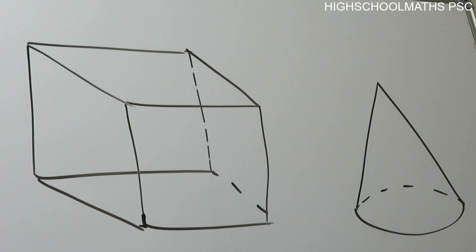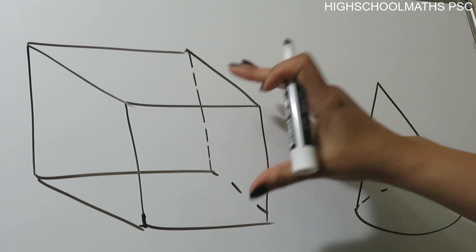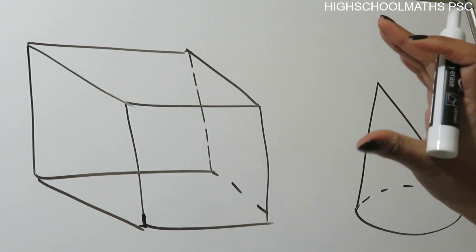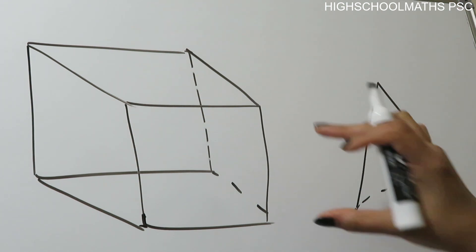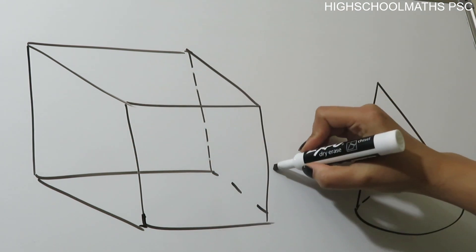Here we are going to look at two pieces. There is a cube, and we are going to fit a cone inside the cube. The cube has an edge of 18 cm.